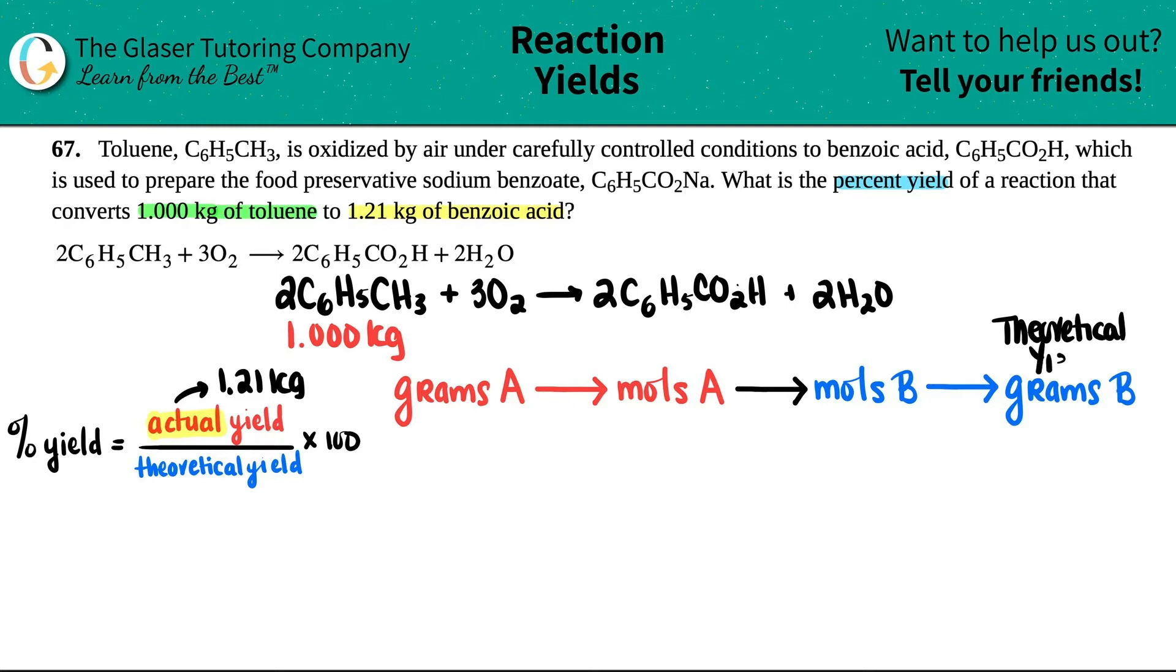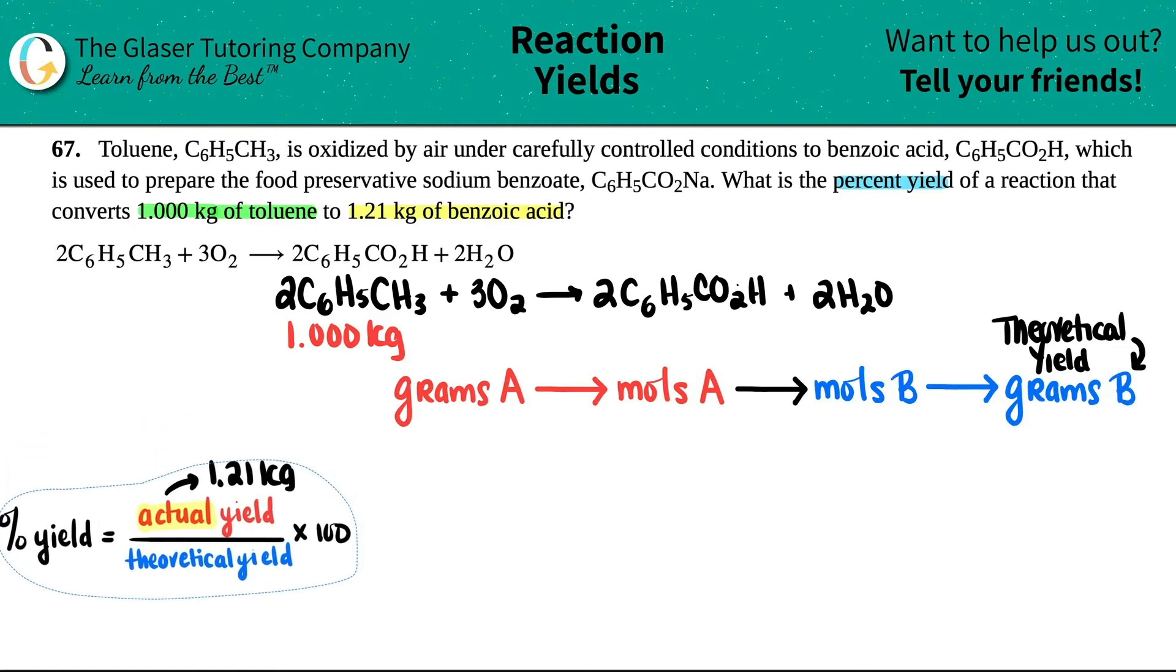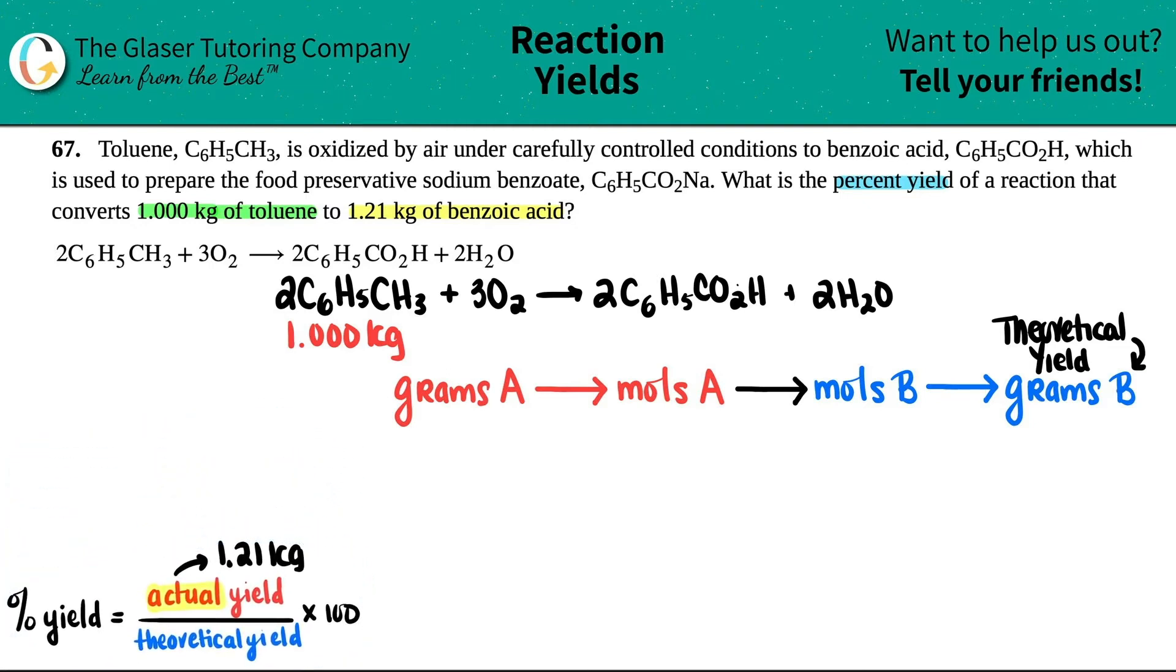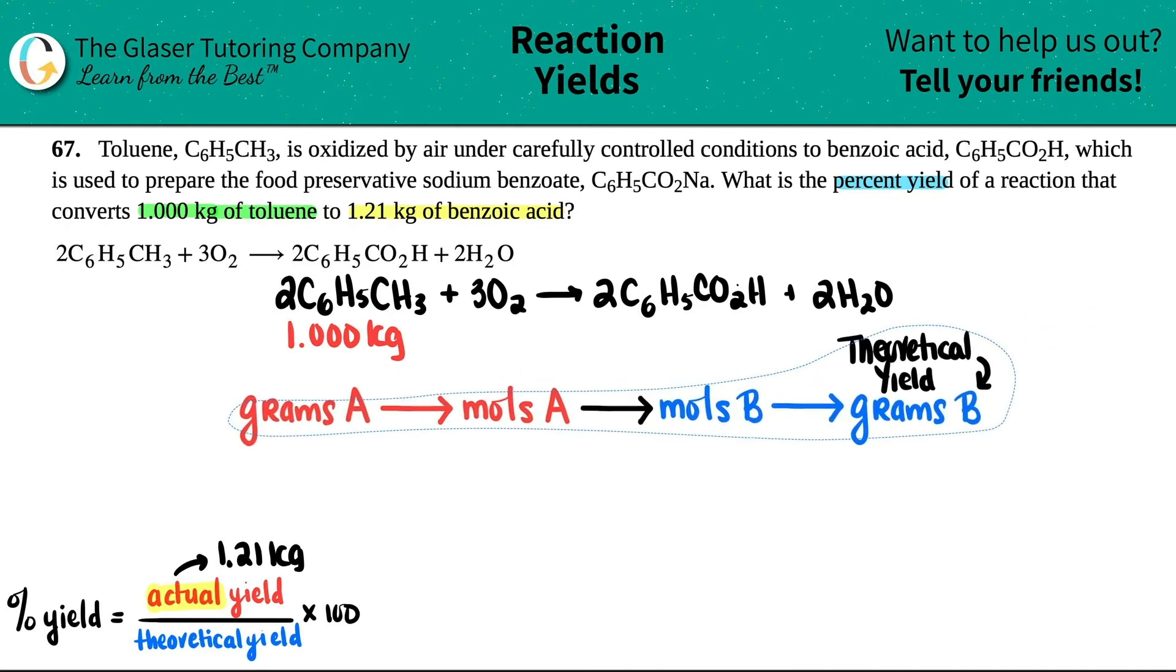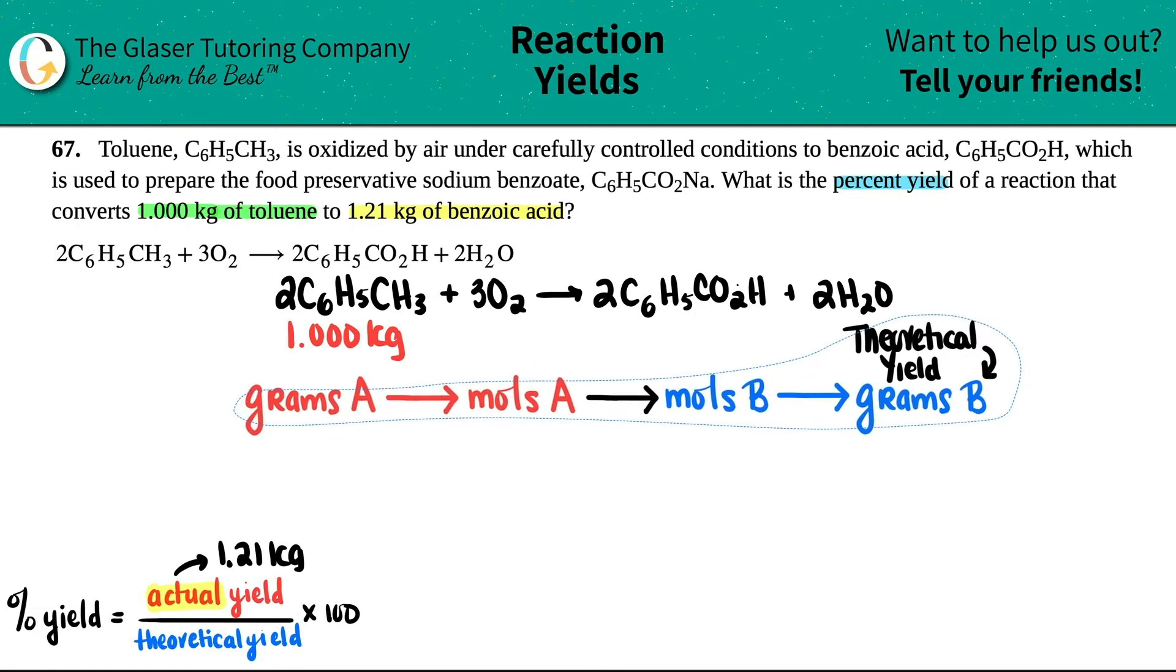If we're trying to find the percent yield, that means we should know what the actual yield is and what the theoretical yield is. The actual yield is literally what you actually got in the lab. This person actually converted the toluene into 1.21 kilograms of benzoic acid. So we know this number. The only thing that we need to find out is what's the theoretical yield.